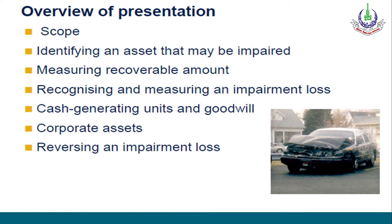In Scope, we will discuss which assets this IAS is applicable to, and which assets it is not applicable to. We will look at identifying an asset that may be impaired, measurement of recoverable amount, recognizing and measuring an impairment loss, CGU and Goodwill, Corporate Assets, and Reversing an Impairment Loss.